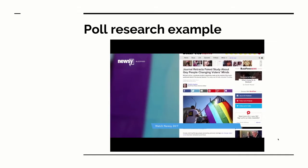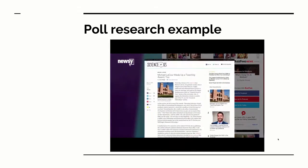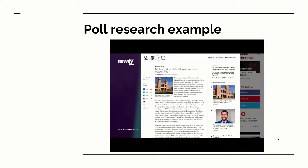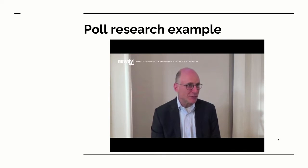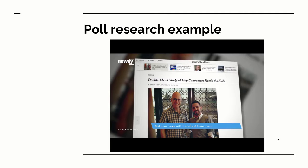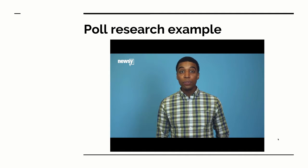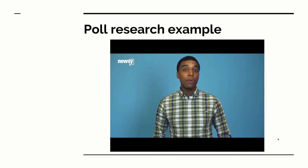Journalists digging into LaCour's work found other inconsistencies: institutions he claimed gave him grant money told BuzzFeed they'd never given him a penny, and New York Magazine found his CV listed a teaching award he never received. Columbia University professor Donald Green, who co-authored the paper, was put in an awkward spot — he's the one who ultimately asked Science to retract it. He told the New York Times he never saw LaCour's data and gave the then-graduate student the benefit of the doubt. Critics say Green was too trusting.